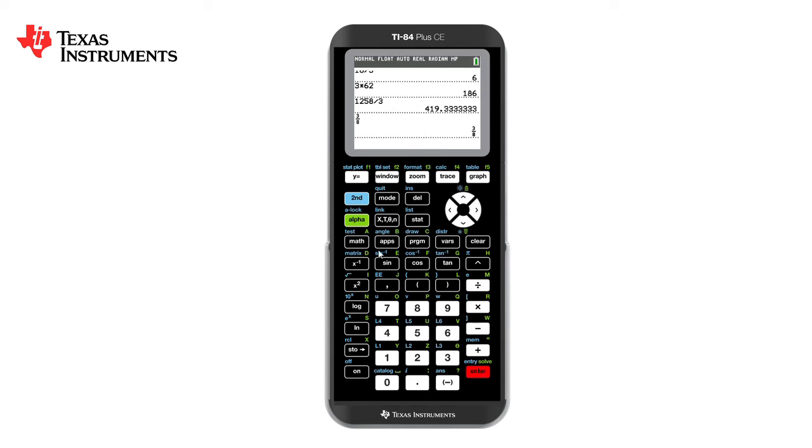By pressing enter we get the answer as a fraction and by pressing alpha F1 again we can convert that to a decimal if required. Equally we can convert it back to a fraction again.